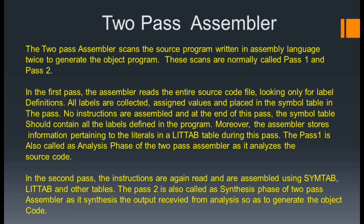At the end of Pass 1, the symbol table should contain all the label definitions in the program. The assembler also stores information pertaining to literals in a literal table during this pass. Pass 1 is also called the analysis phase of the two-pass assembler. In the second pass, the instructions are again read and assembled using the symbol table, literal table, and other tables. Pass 2 is also called the synthesis phase, as it synthesizes the output to generate the object code.